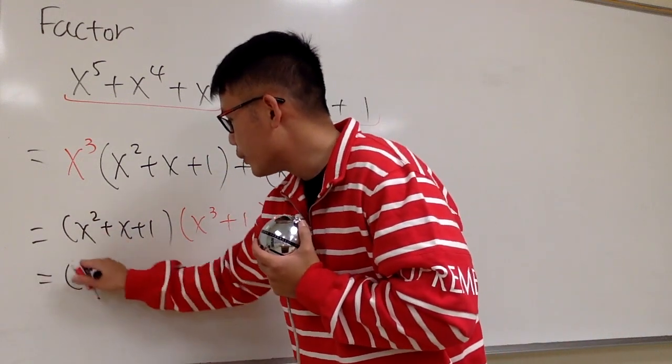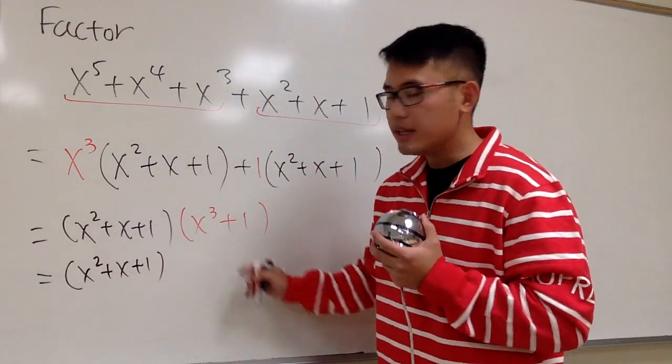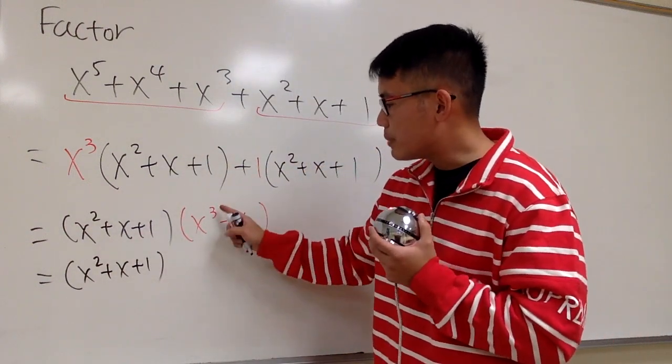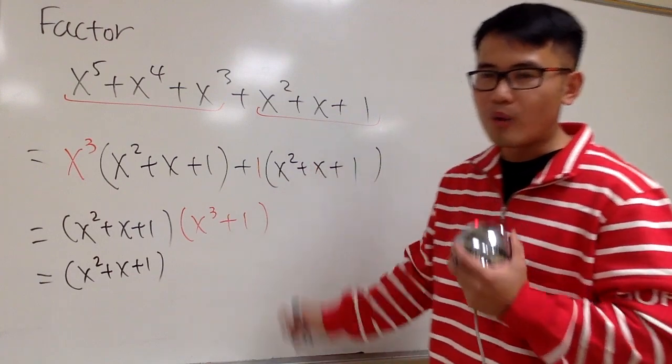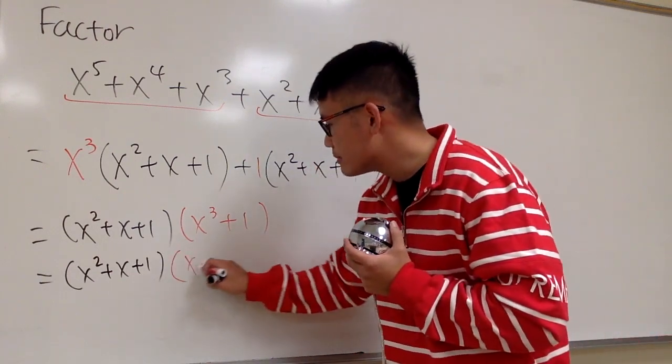Keep this all the way in the front: x squared plus x plus one. And then to factor this, this is the same as x to the third power plus one to the third power. And we have to use that formula. And we will get x plus one, the a plus b.